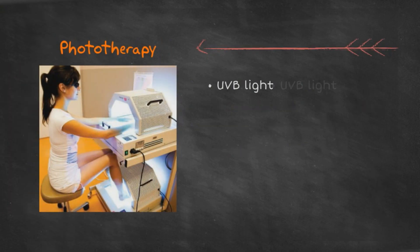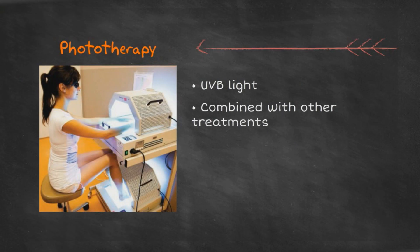Phototherapy involves exposing the skin to ultraviolet light, usually type B, which penetrates the skin and slows down growth of skin cells. It is often combined with other treatments to become more effective. Natural sunlight also contains UVB rays, so don't be afraid to get some sunlight.